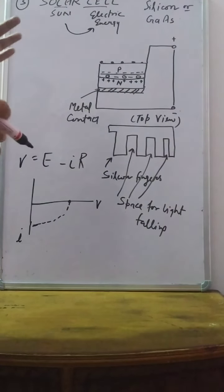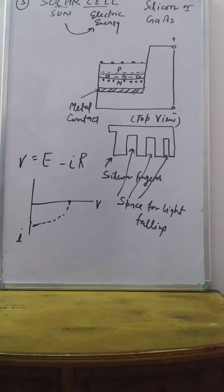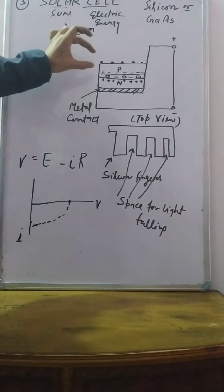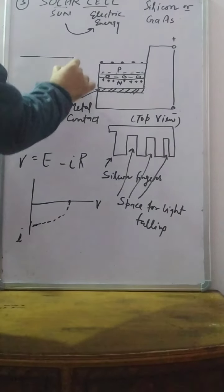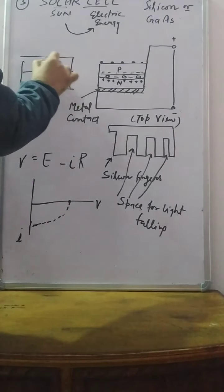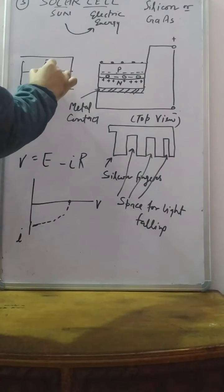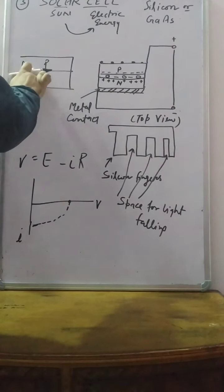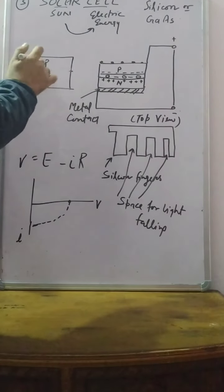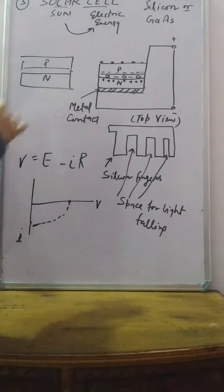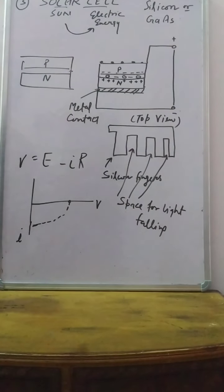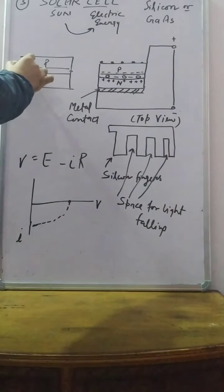How does it work? This is the particular p and n junction — this is your p and this is n. In between, there is a depletion layer.